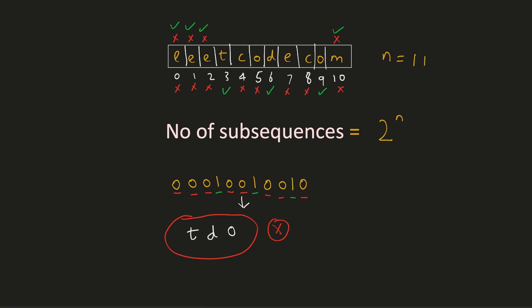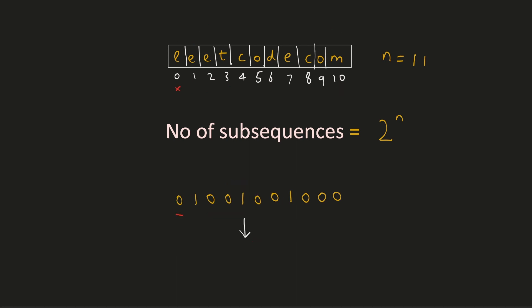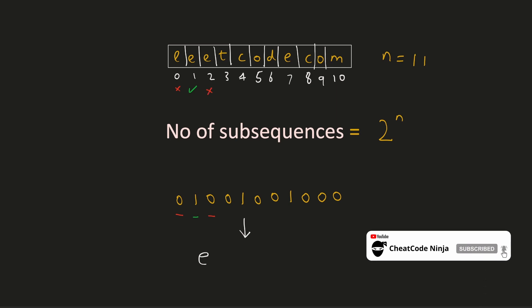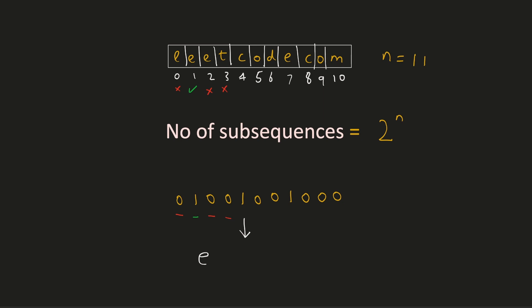Let's look at another example where the subsequence generated is a palindromic subsequence. We will ignore the zeroth character because the bit is 0. Since the bit is 1, we will include the first character. We will ignore the next two characters as the bits are 0. We will include the fourth character C as the bit is set to 1. We will ignore the next two characters. We will include the seventh character as the bit is set to 1. As the remaining bits are zero, we will ignore the remaining characters. Hence our subsequence is ECE, which is indeed a palindromic subsequence.